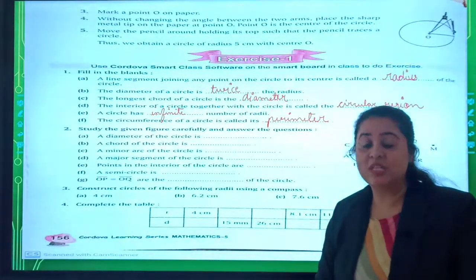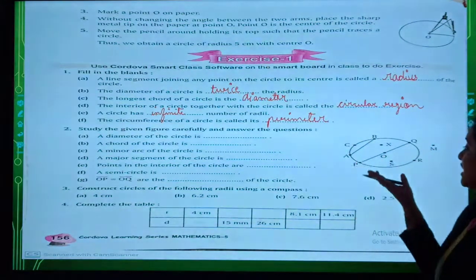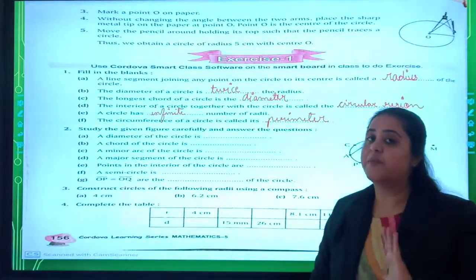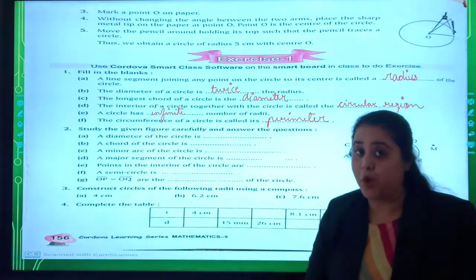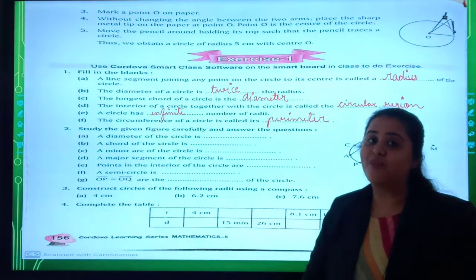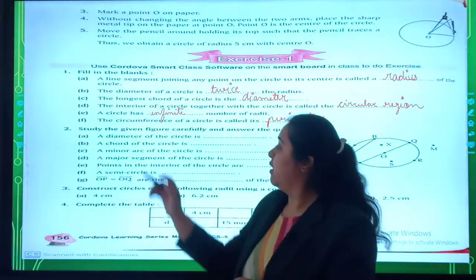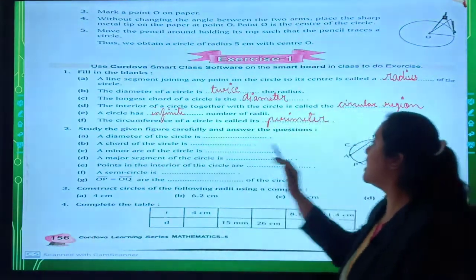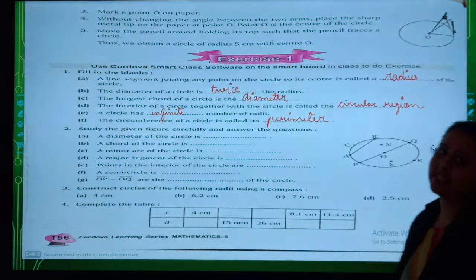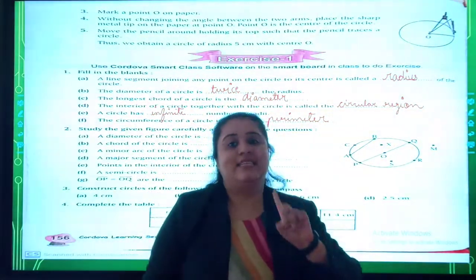Question number 2 is study the given figure carefully and answer the questions. You have to study this figure and answer the question. This type of question is very very important, because usually it appears for 5 marks in your question paper. First one, the diameter of the circle is dash. According to this figure which is diameter. You have to focus. PQ. This is the diameter.